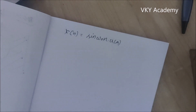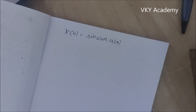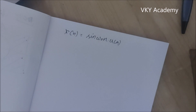Hello everyone. In the previous lecture, we solved one numerical on the Z-transform of a trigonometric function, specifically x(n) = cos(ω₀n)u(n). Today we will determine the Z-transform for the function x(n) = sin(ω₀n)u(n).